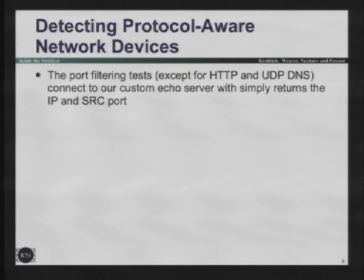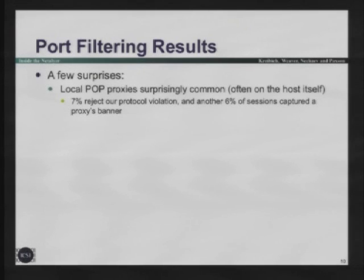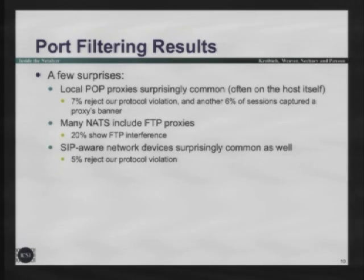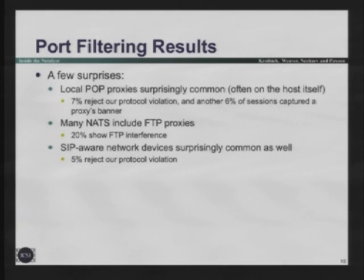Protocol filtering tests connect to an echo server that is deliberately not any other protocol, so anything protocol-sensitive will kill it and we can detect proxies and firewalls. Some surprises: local POP proxies are very common - often this is on the host itself, AV shimming itself into the network stack. NATs include FTP proxies, quite common, and most of these proxies don't like our communication. SIP awareness is actually quite common - we've had several cases of network admins saying they aren't doing anything to SIP, then discovering a random firewall in the middle of the network implements SIP-aware logic and terminates stuff that isn't SIP.